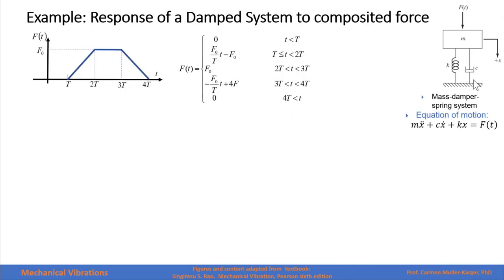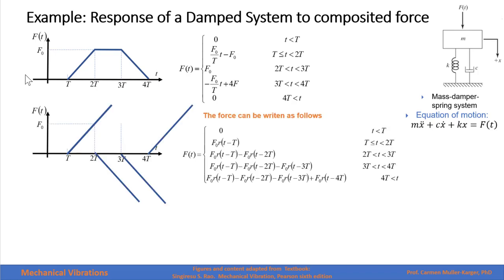The next example is to find the response of a damped system to a composite piecewise force. The force is 0 for T less than capital T, then a linear ramp up, then a constant, then a linear decrease, and then 0 after 4T. Using the superposition method, we identify known functions with an equivalent combined response. From T to 2T we have a ramp. From 2T to 3T we want a step function, so we subtract this ramp and obtain a constant force, effectively removing that piece of the function.